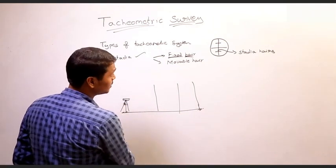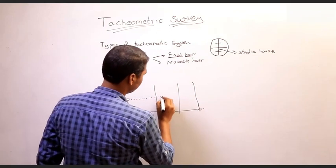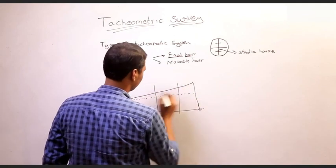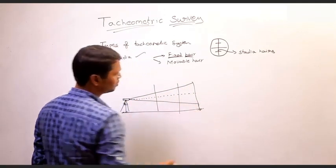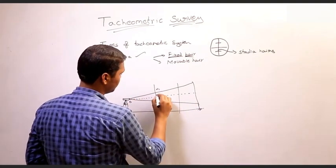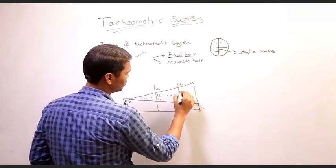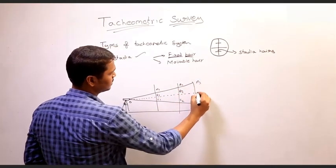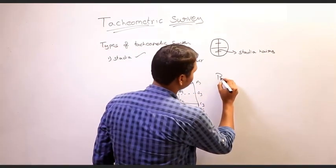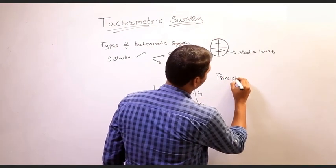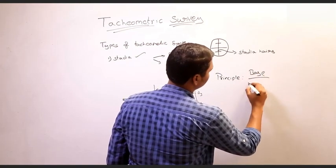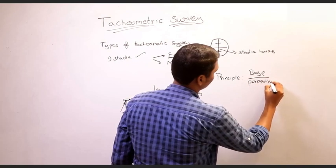In the tachymeter you will have 3 lines of sight: the center one, the top one, and the bottom one. You will have 3 readings from the tachymeter — let us label them A1, B1, C1 for the first staff position; A2, B2, C2 for the second; and A3, B3, C3 for the third. The main principle of the fixed hair tachymeter is that the ratio of base to perpendicular is constant.